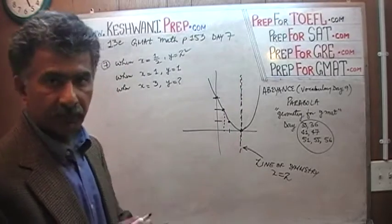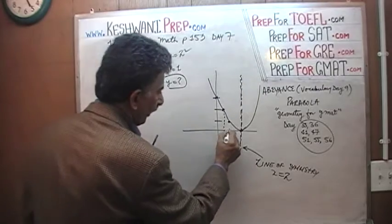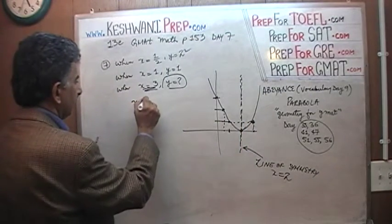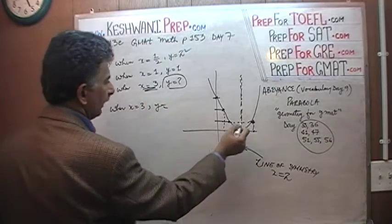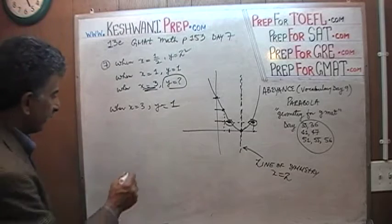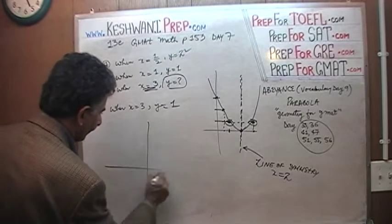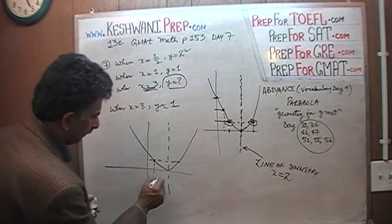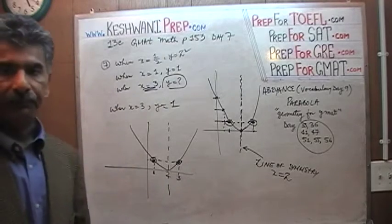On the line of symmetry, the value of y keeps changing, but x equals 2 regardless. The question simply is: how much is y when x is 3? Because the graph is symmetric around x equals 2 — with 1 on one side and 3 on the other — the point at x equals 3 mirrors the point at x equals 1. So when x is 3, y is 1. That's all.